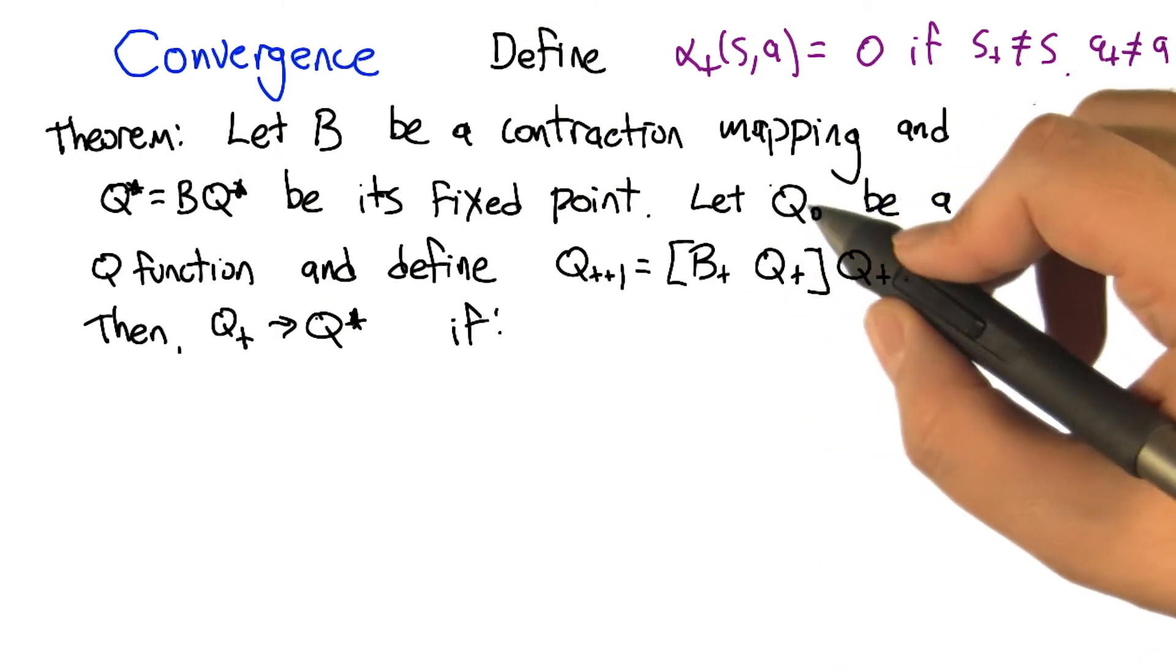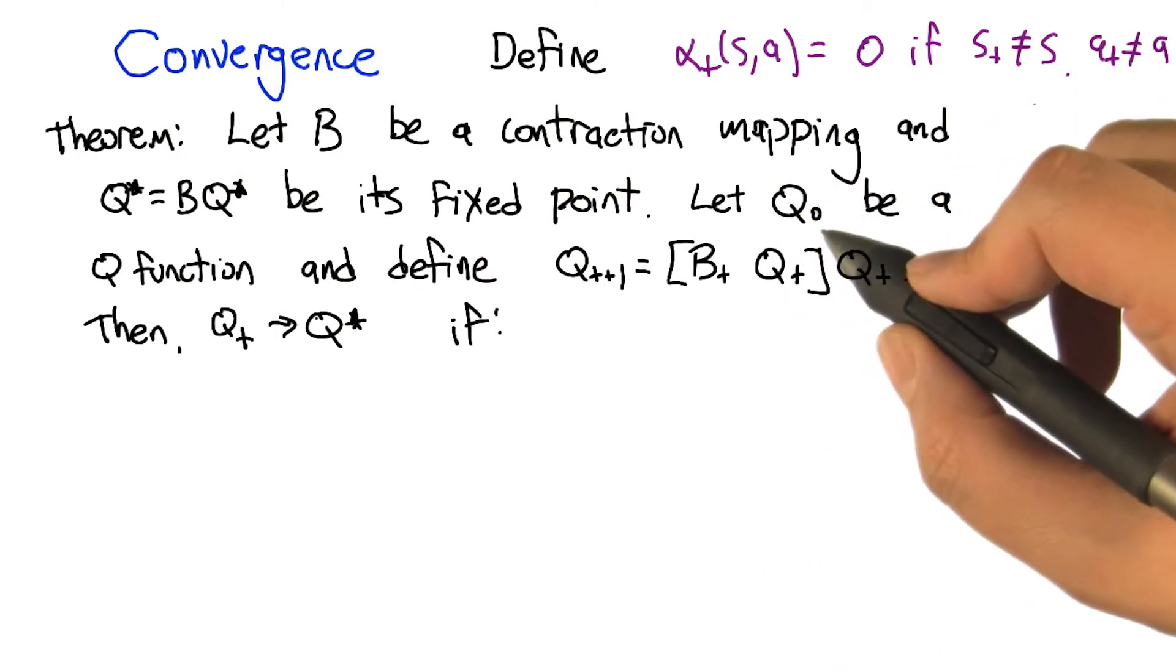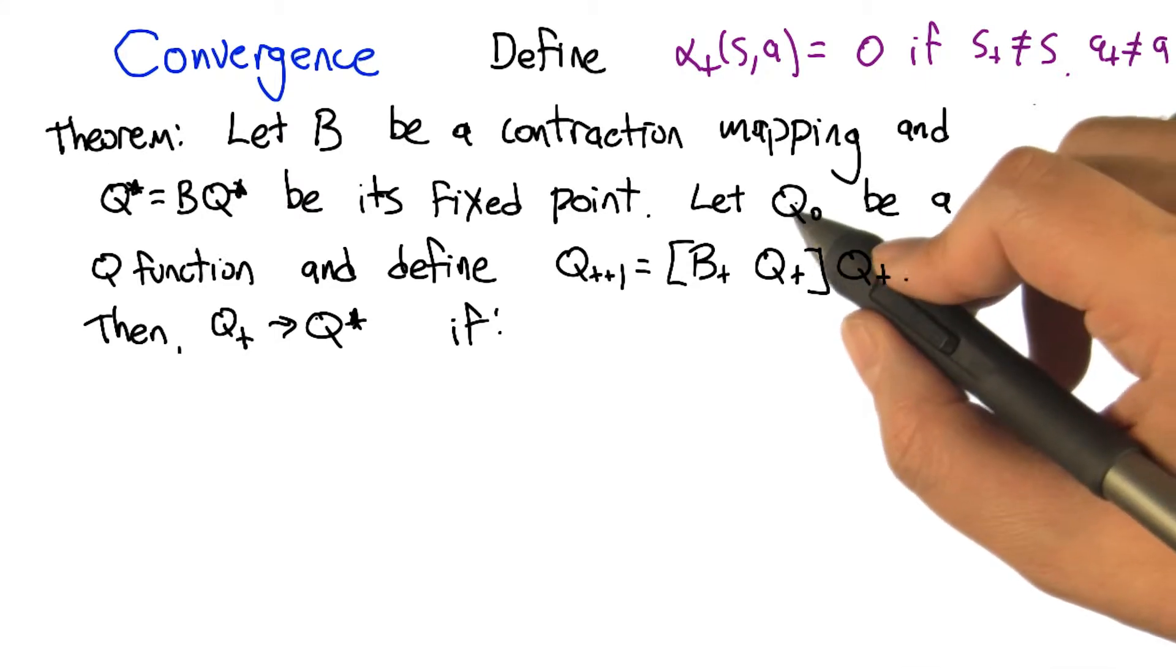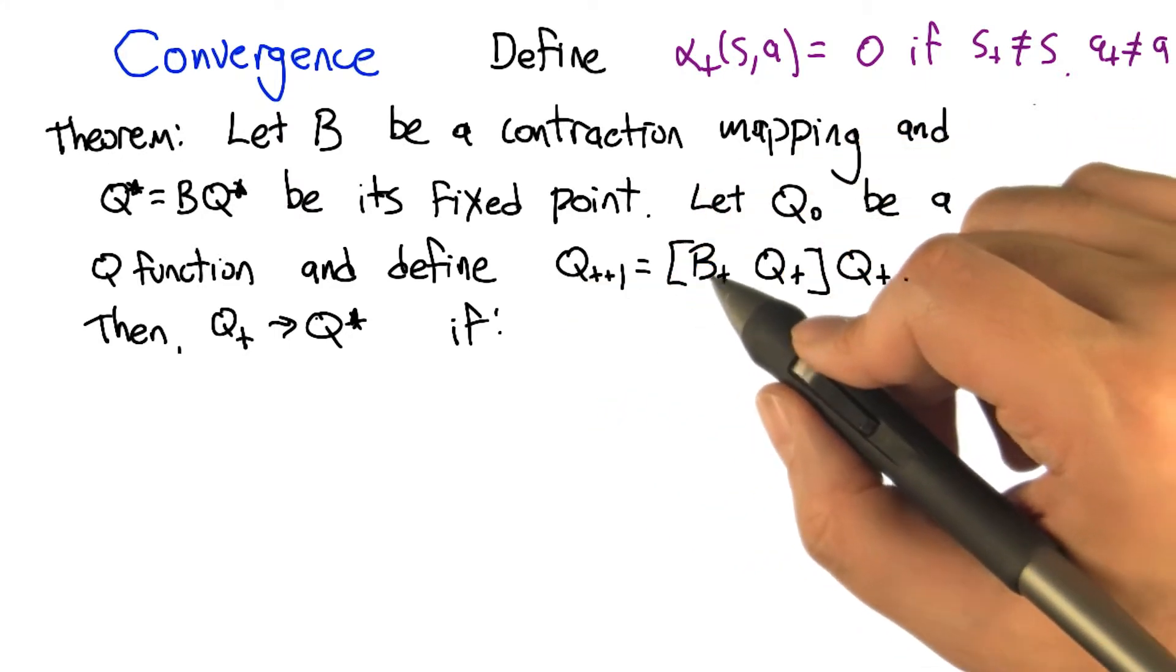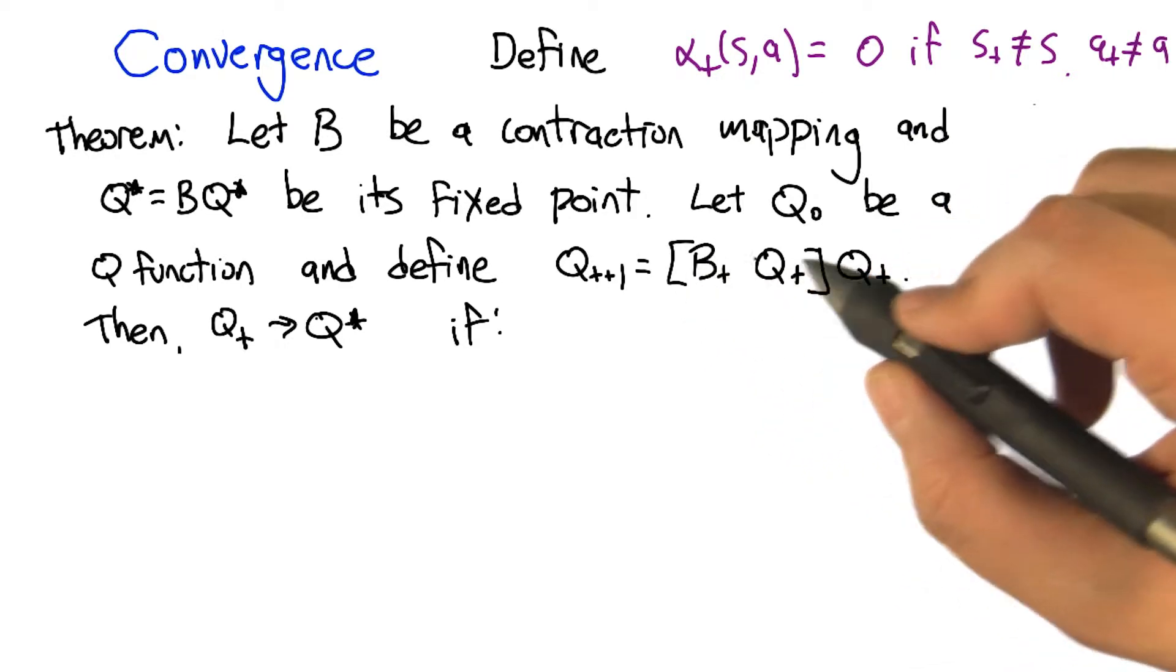Let's imagine that we've got some sequence of Q functions that starts off with Q₀. The way we're going to generate the next step from the previous step is we have a new kind of operator, B_T.